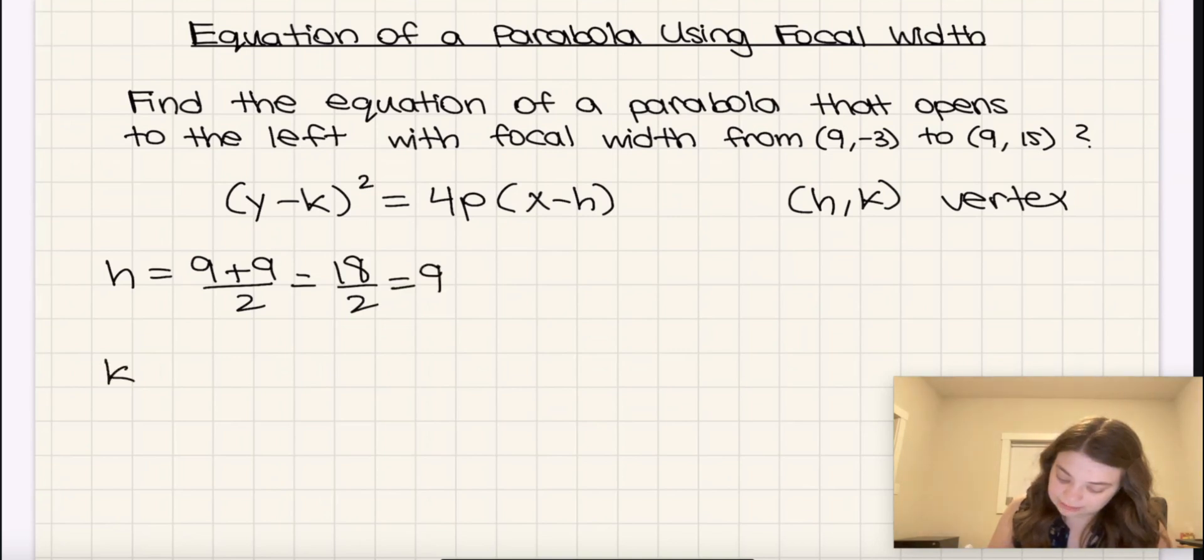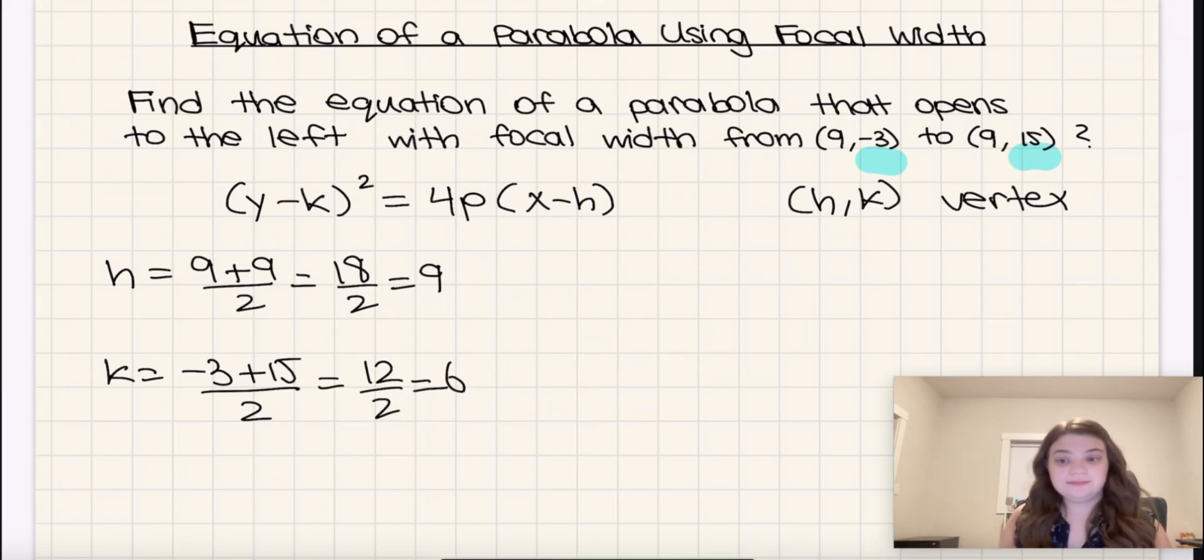Then we have k, which the k value is going to be negative 3 plus 15 divided by 2. So the average of negative 3 and 15, that's going to be 12 divided by 2, which is 6. So therefore, h is 9 and k is 6.